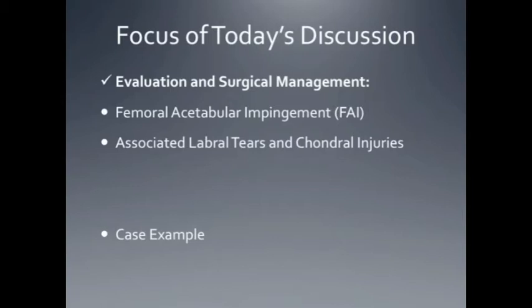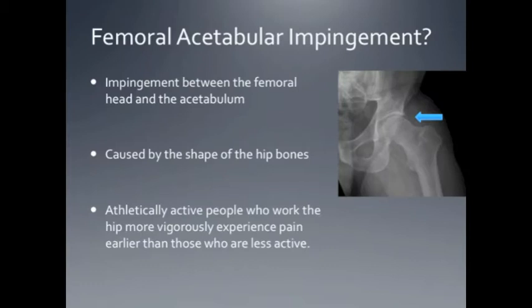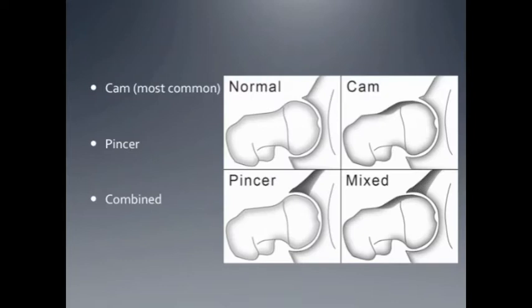I will give a case example at the end. What is femoral acetabular impingement? It's essentially impingement between the femoral head and the acetabulum, or cup, in the hip. It's caused by abnormal shape of the bones. There are three different types: cam, pincer, and combined.